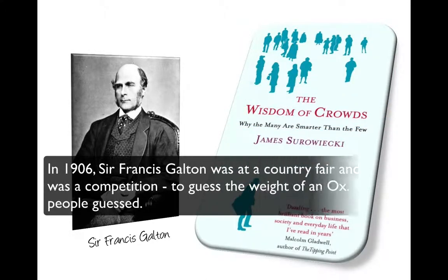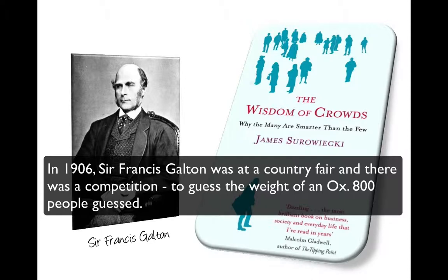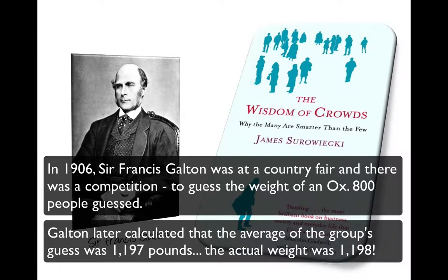In 1906, English polymath Sir Francis Galton was at a country fair. At the fair, there was a competition where people had to guess the weight of an ox on display. Around 800 people guessed. Some were ox breeders and could be considered experts, but most were general onlookers with no insider information. Galton later calculated that the average of the group's guess was 1,197 pounds, and the actual weight of the ox was 1,198 pounds — a very accurate guess, especially considering it was an average of 800 guesses by non-experts.